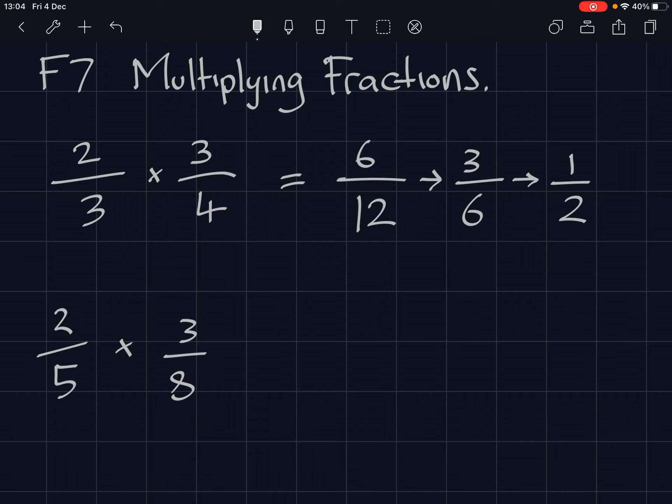Let's look at the other example. Two-fifths times three-eighths. So again, times the top two numbers together, two times three is six, and then five times eight is forty. Can we simplify this down?